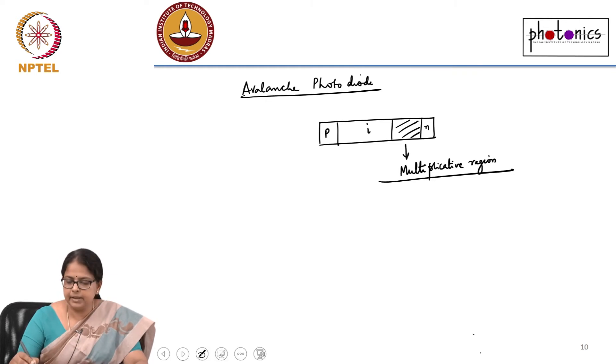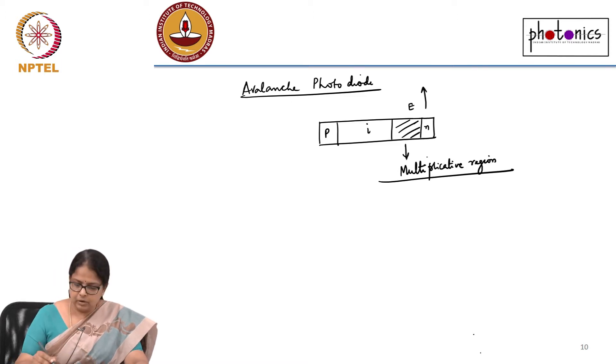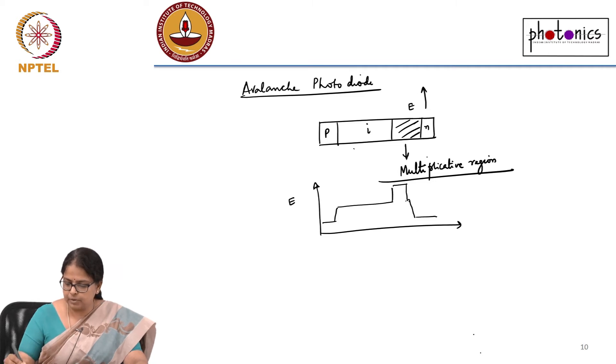And this region, because the doping is high, the electric field experienced in this region is really high. The electric field experienced by the electron in the hole in this P region is low, in the intrinsic region it goes high, in the multiplicative region it even goes higher and then it goes back to 0. This is electric field as a function of this position. You have very high electric field set up there.